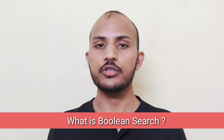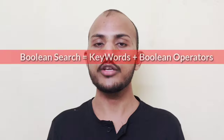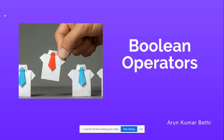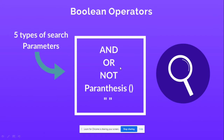Boolean search is the way to organize your search by using a combination of Boolean operators and the given keywords in the job description. There are five main Boolean operators: AND, OR, NOT, parentheses, and quotation marks. Boolean search produces more relevant and accurate results for your candidate search on LinkedIn, Naukri, or any other portals.